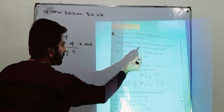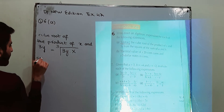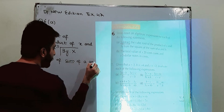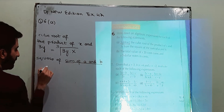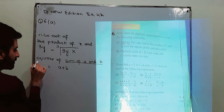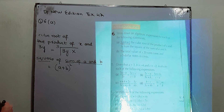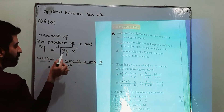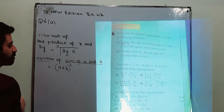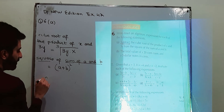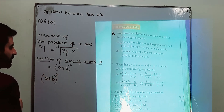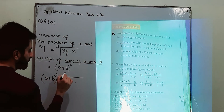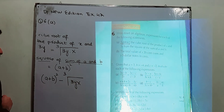Next, the square of the sum of A and B. The sum of A and B is A plus B, and its square is (A+B)². Now you have to subtract the cube root of the product of X and 3Y from the square of the sum of A and B. So the answer is (A+B)² minus the cube root of 3XY.